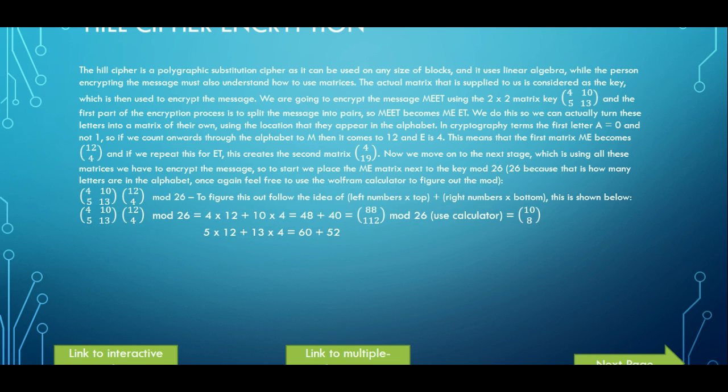I'll show you in a minute anyway to make it more understandable. So basically as you can see here we have 4 times 12, so that is 4 here. And 4 times 12 equals 48 and 10 times 4 equals 40. So then we have 48 plus 40 which obviously gives us 88.